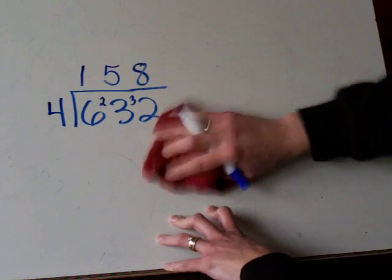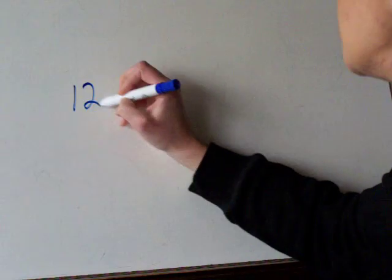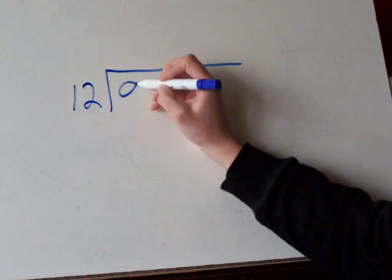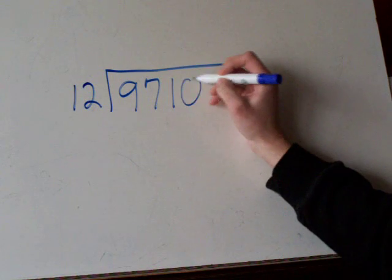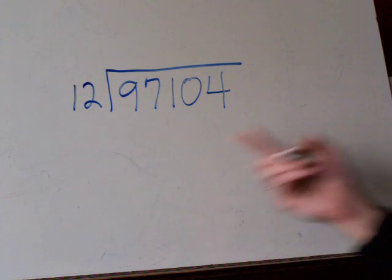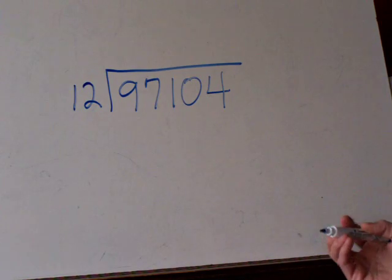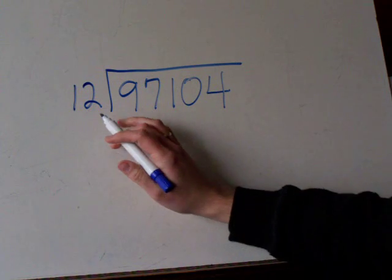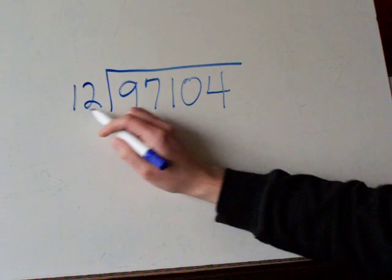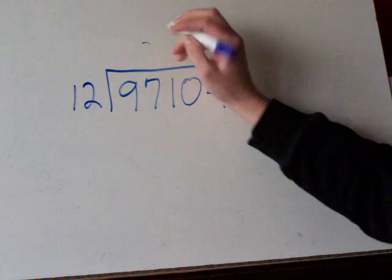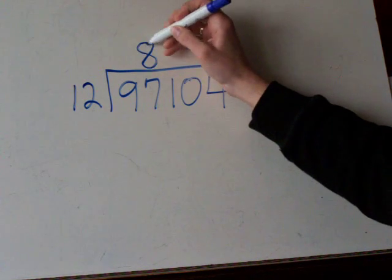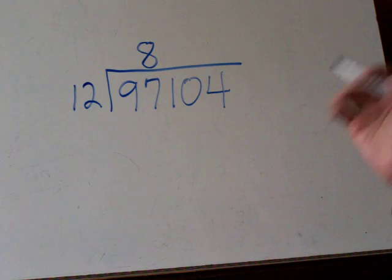You can even do short division with longer numbers. You have, for example, 97,104. We're going to divide that by 12. Same process as the last way with the shorter numbers. 12 goes into 97, excuse me, 8 times. 8 times 12 is 96.